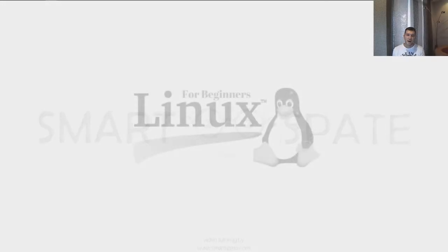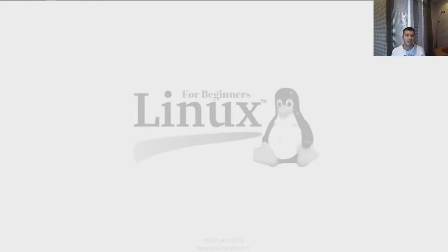Hello guys and welcome back to Smart Space Information Technology Blog. Today we're going to show you how you can use Linux operating system and command line. I'm going to use a Raspberry Pi 3 as a main source. You can use any Linux distribution whether it's Debian, Kali, or Ubuntu — it doesn't matter because we just need the command line. What we're going to show you today is how to navigate through files and folders using command line.